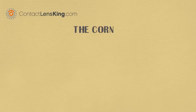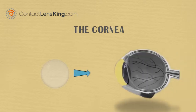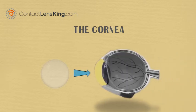Contactlensking.com presents the cornea. The cornea is the eye's clear outermost surface at the front of the eye, which plays a critical role in your ability to focus your vision. The cornea does not obtain its nourishment from blood cells like other bodily tissues,